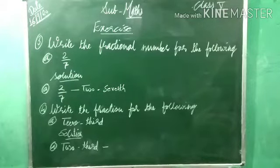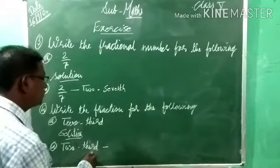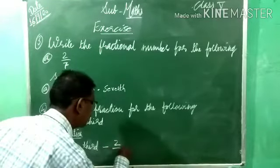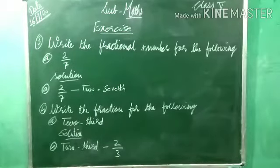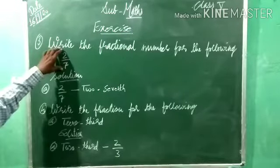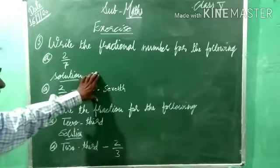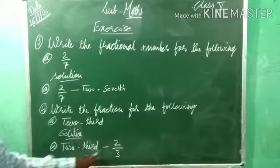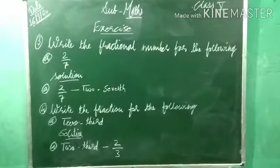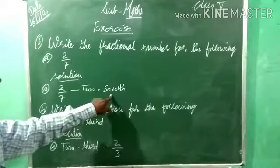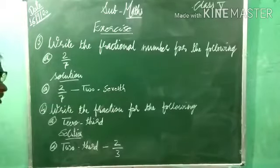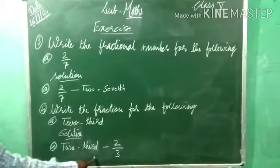Now, fourth one: write the fraction for the following. 2 thirds is given. So, which fraction will we get? 2 by 3. Sometimes if it is given in numeral, we have to write in words. Sometimes it is given in words and we have to write in numeral. For 2 by 7, don't write just 7 — we have to add 'th' there.